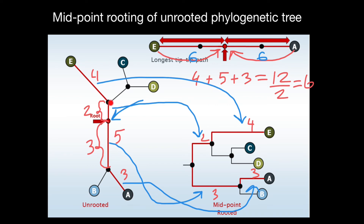The length of the branches here directly corresponds with the amount of genetic change — or it can be, for example, protein change, change in polypeptide sequence, or in RNA sequence. Now let's talk about the strengths and weaknesses of midpoint rooting. We prefer to use this method when the internal branch where we place the root is long enough.